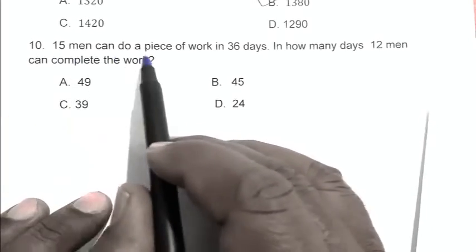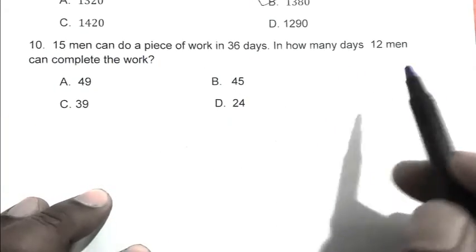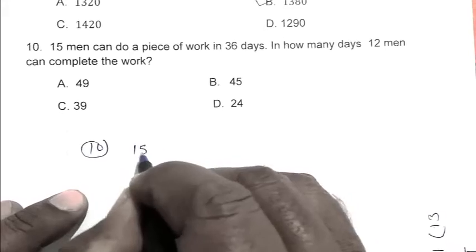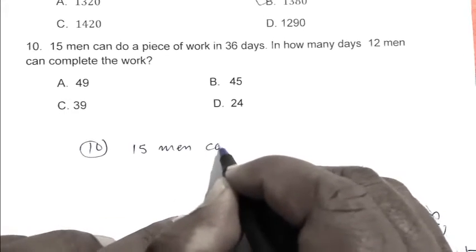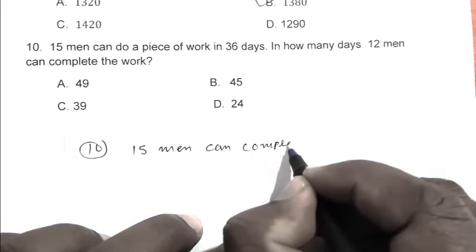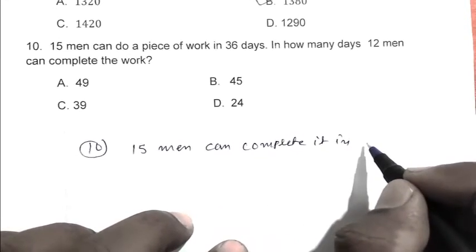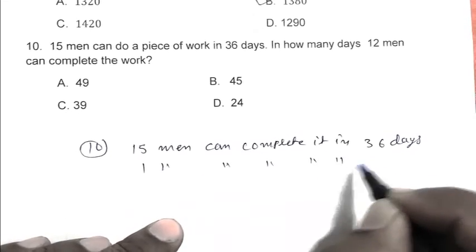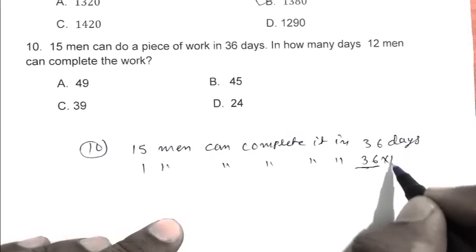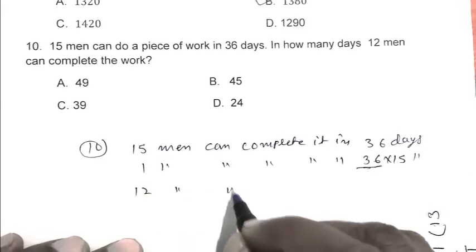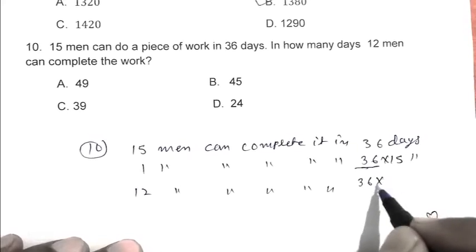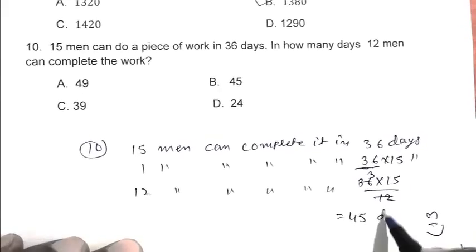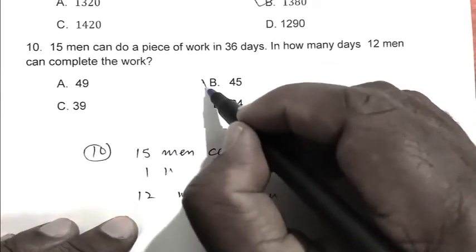Question number 10: 15 men can do a piece of work in 36 days. In how many days can 12 men complete the work? 15 men can complete it in 36 days, so 1 man can complete it in 36 × 15 days. Therefore, 12 men can complete it in 36 × 15 / 12, which equals 45 days. So B is the right answer.